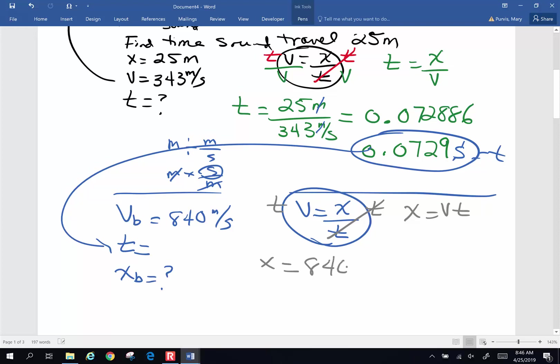Time is 0.0729 seconds. Seconds on the top, seconds on the bottom. Those will cancel. Multiply that times 840. And I ended up with 61.2 meters, which is a long way.